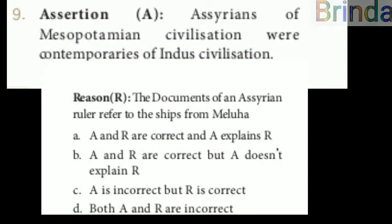Ninth one — assertion and reason. Assertion: Assyrians of Mesopotamian civilization were contemporaries of Indus civilization. Reason: the documents of an Assyrian ruler refer to the ships from Meluha. Options: A — both correct and assertion explains reason; B — both correct but assertion doesn't explain reason; C — assertion incorrect but reason correct; D — both incorrect. The answer is B: assertion and reason are correct but assertion doesn't explain reason.